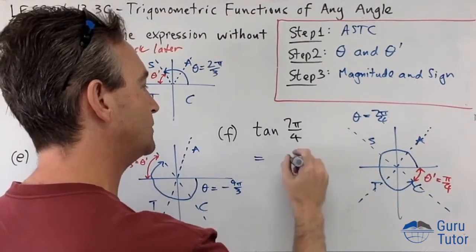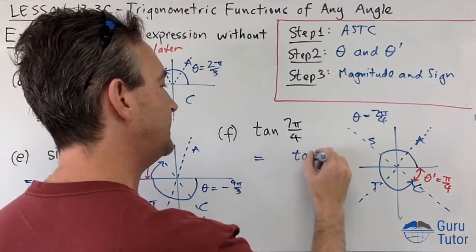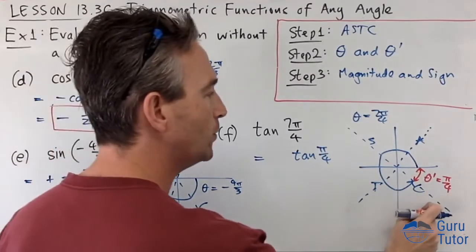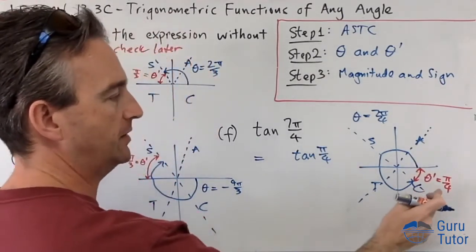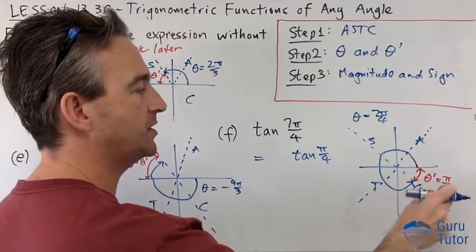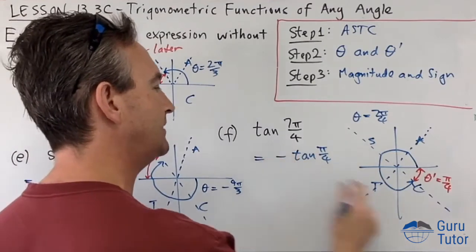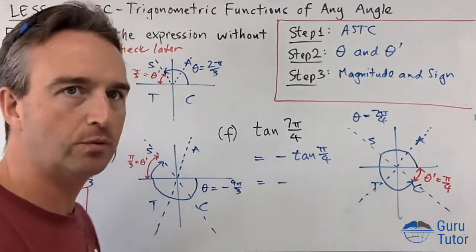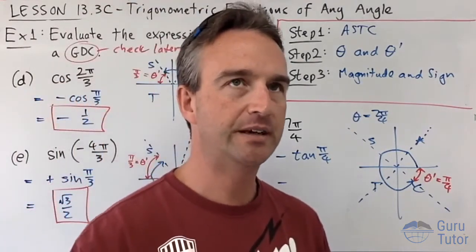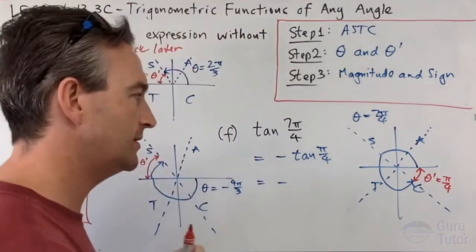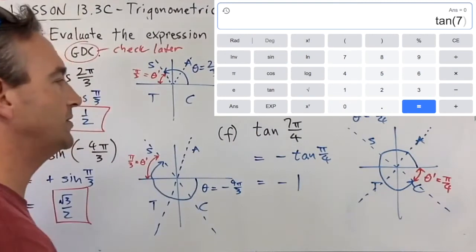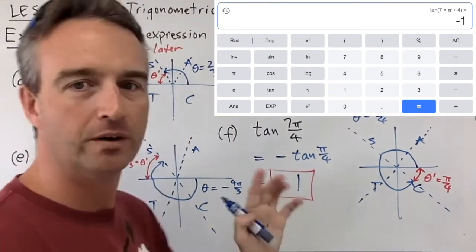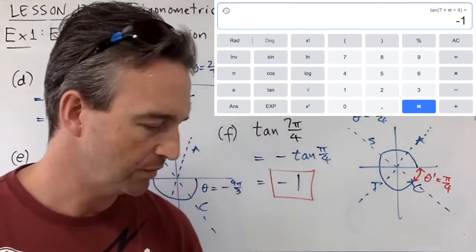So tan(θ) equals tan(θ-dash), but then you've got to think plus or minus. We're in the fourth quadrant: cosine is positive in the fourth quadrant, but sine and tan are negative. So this is going to be negative. tan(π/4) is tan(45°) which is 1. So the answer is -1. Your GDC should give -1 — make sure you're in radians mode.